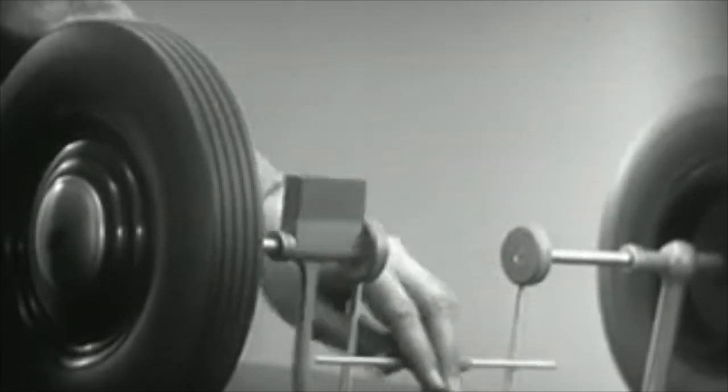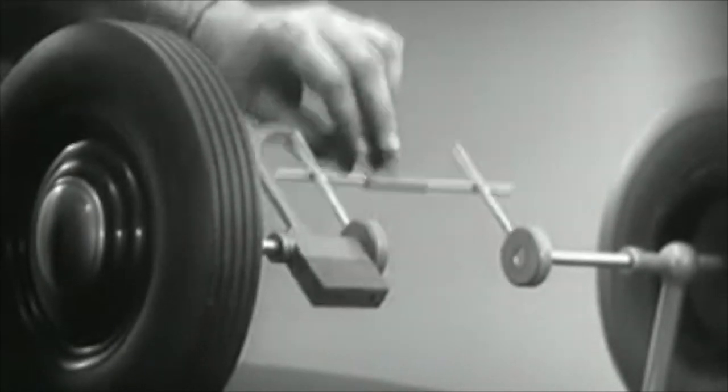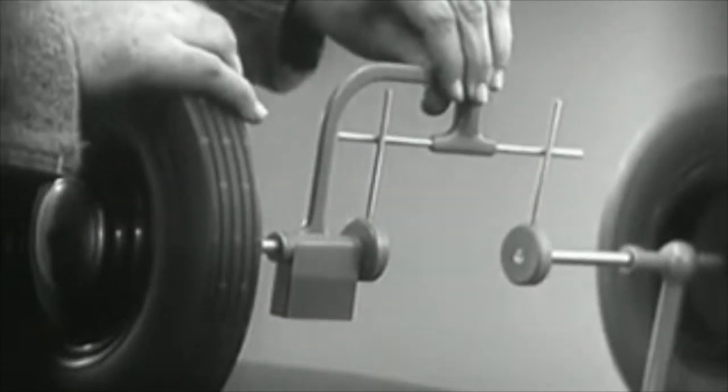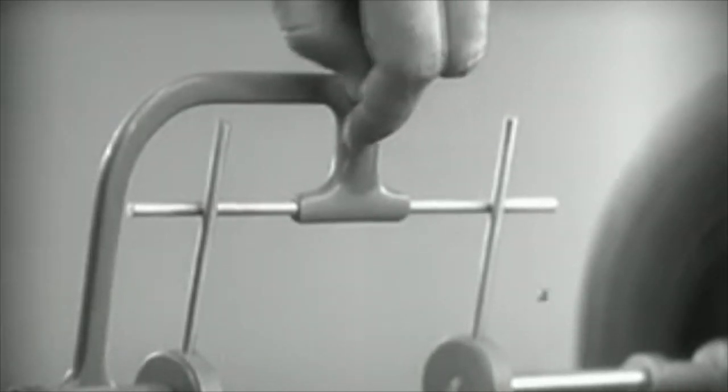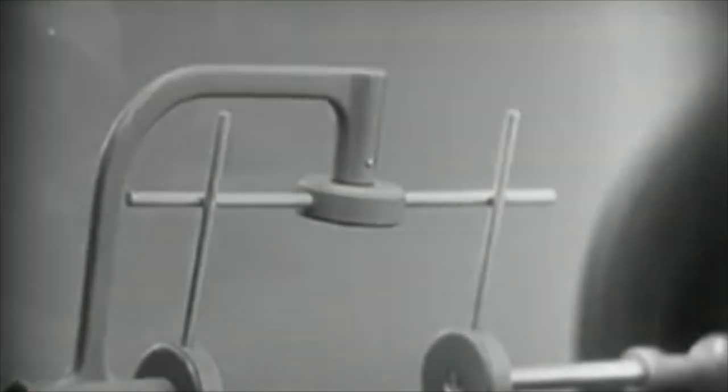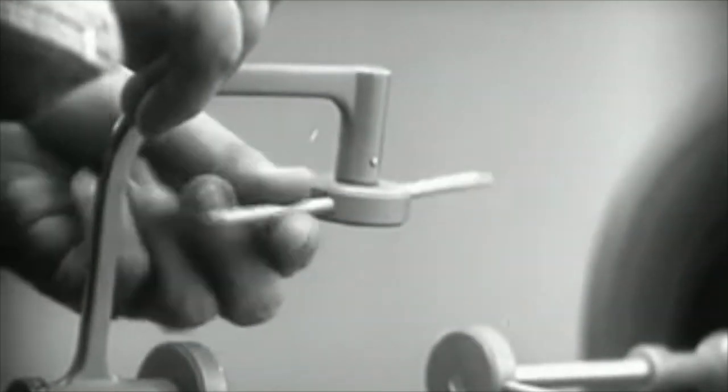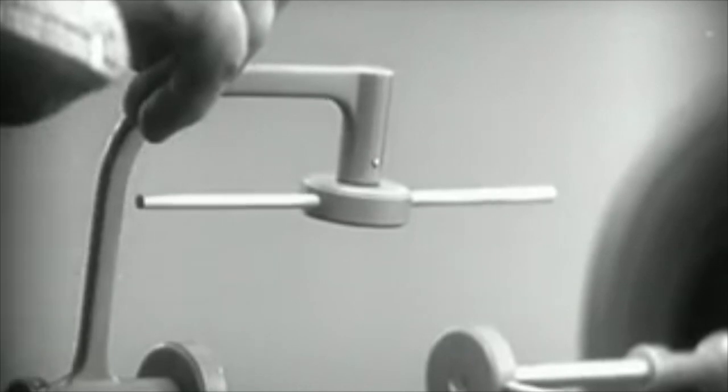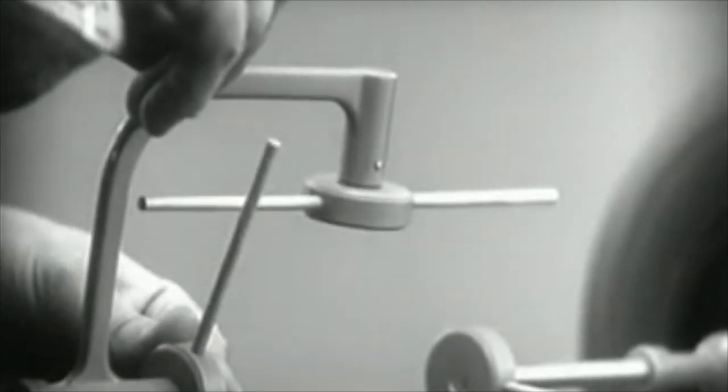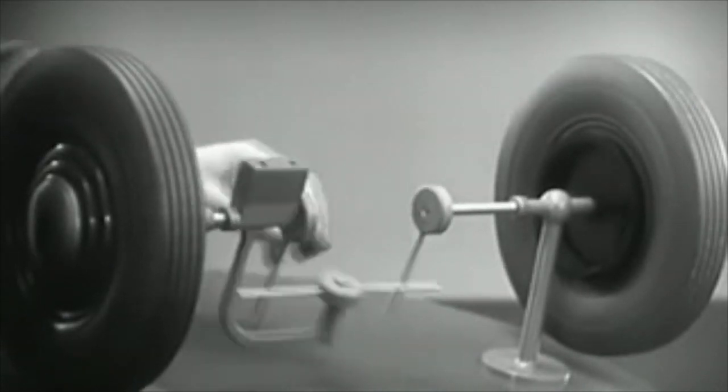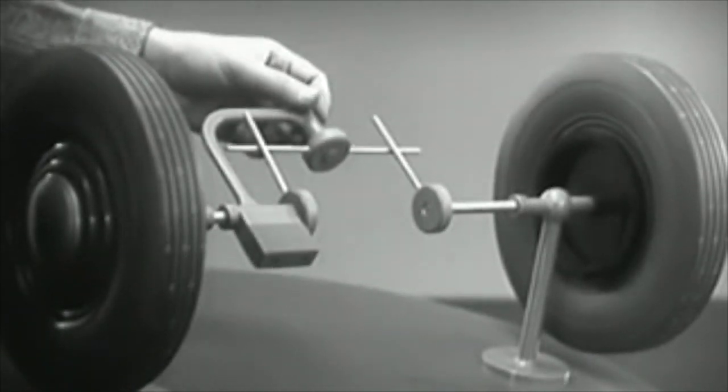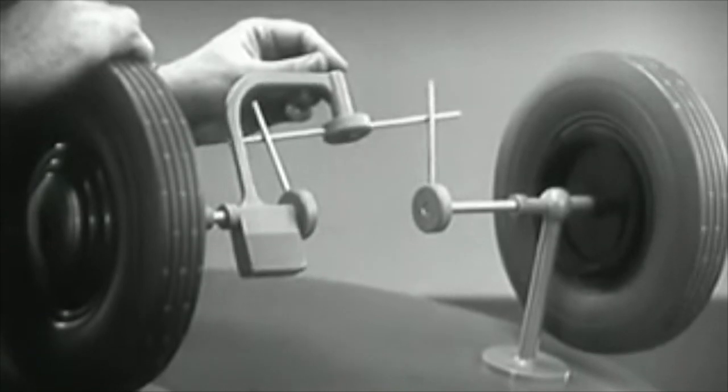Let's put this bar on a pivot so that it can swing in either direction. Now the bar can still turn both wheels at the same speed, and because it pivots it lets one wheel turn even when the other is stopped.